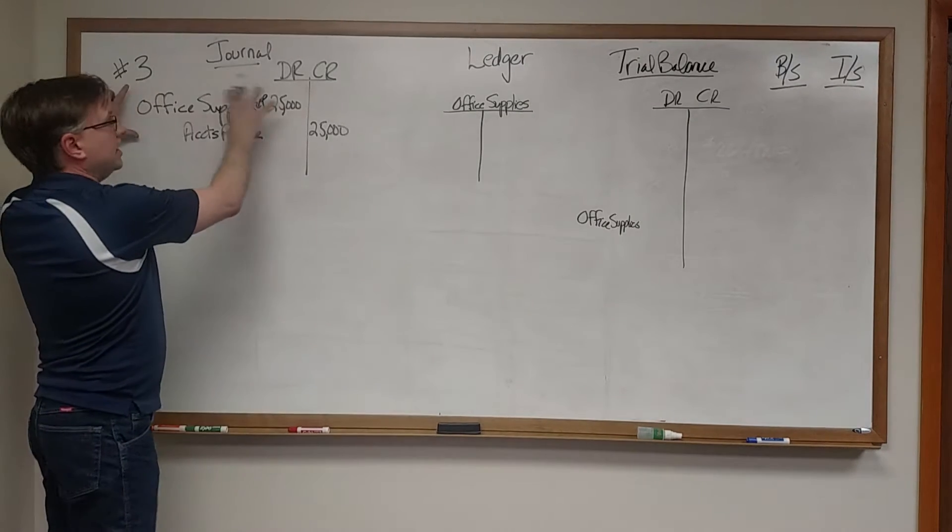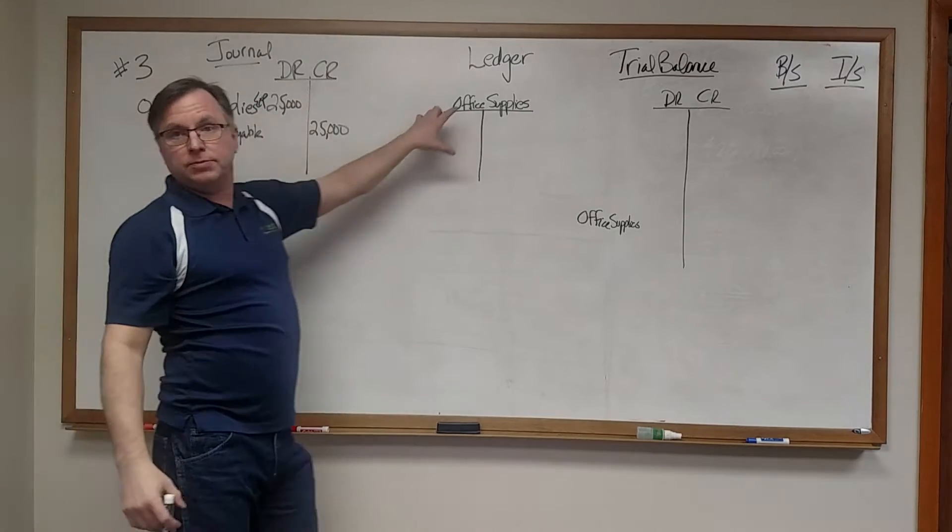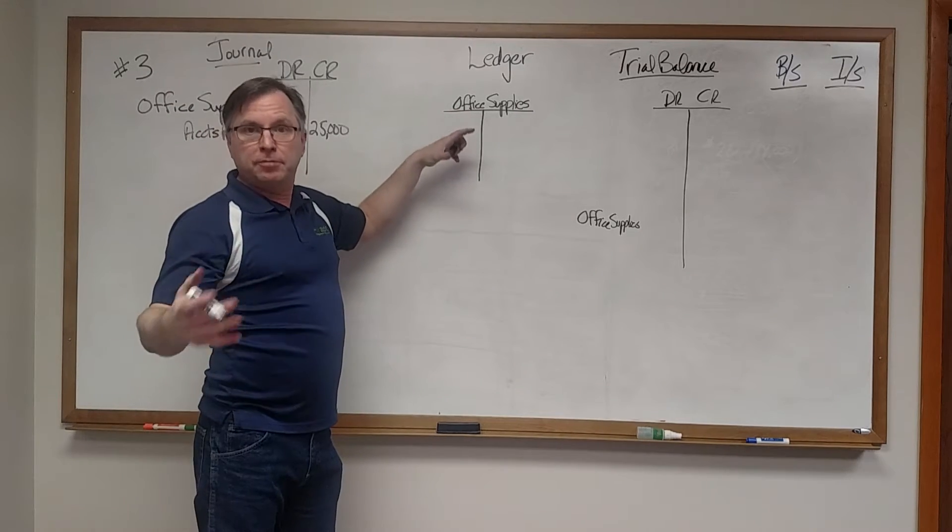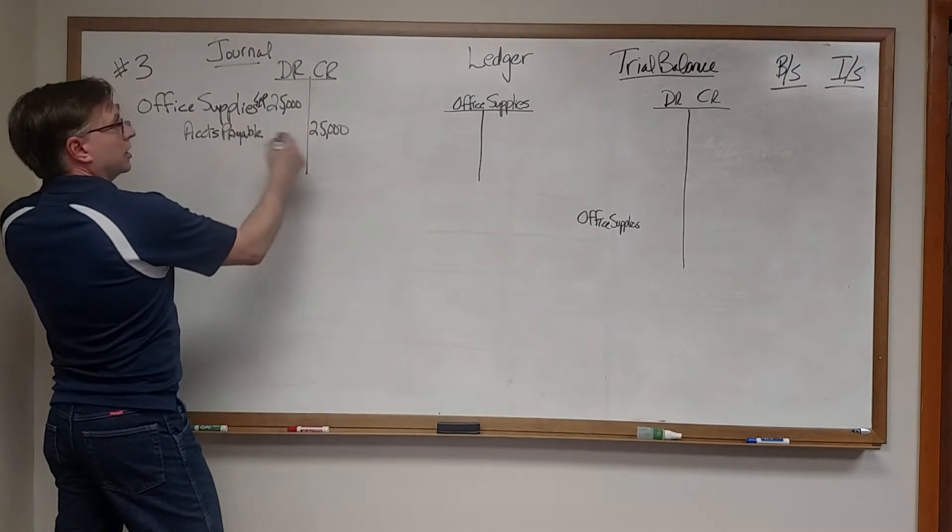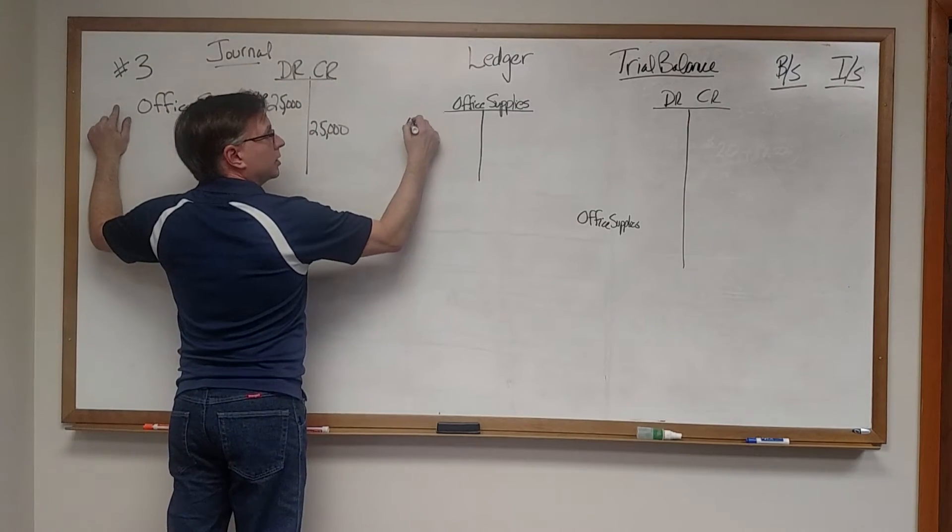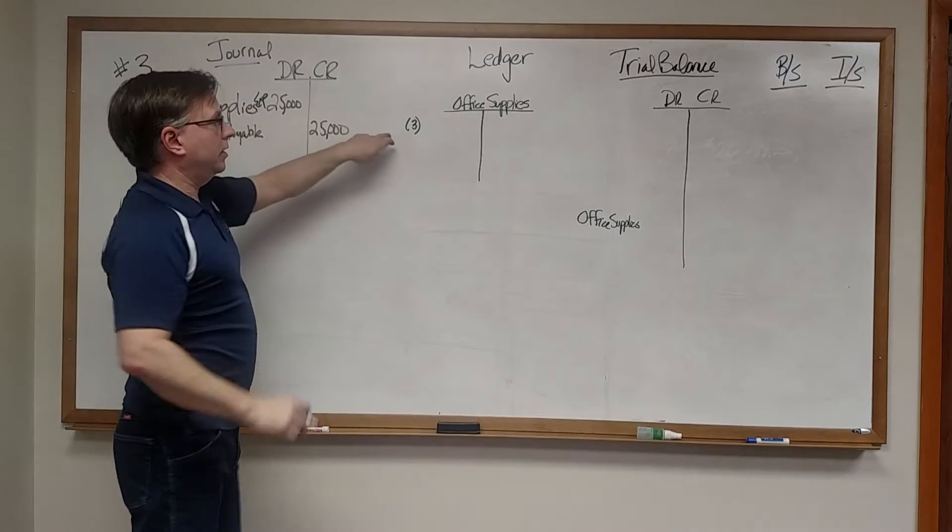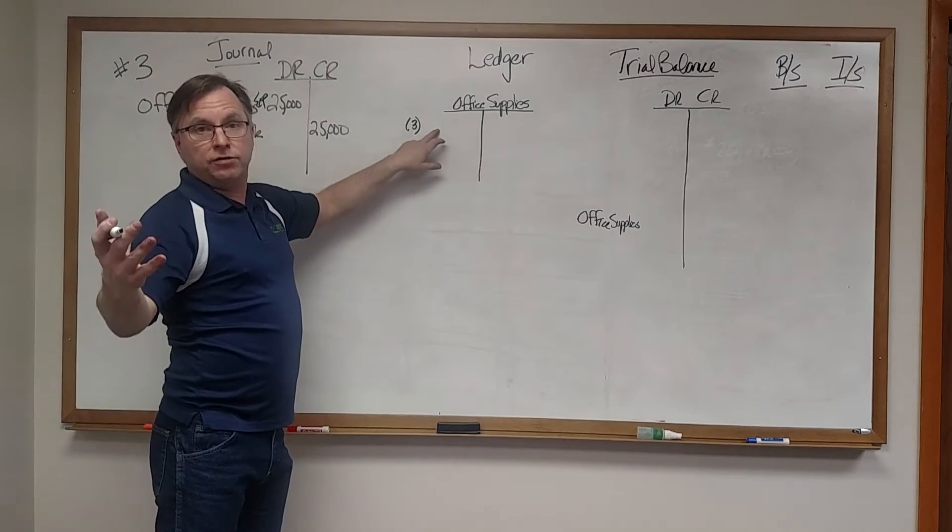So what you're going to do is take these entries and you're going to post them to the general ledger. Now some of them may already be posted for you depending on how much time we have. But you're going to refer to question number three so that we know where this number is coming from.